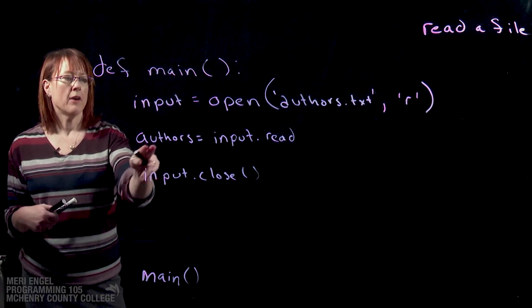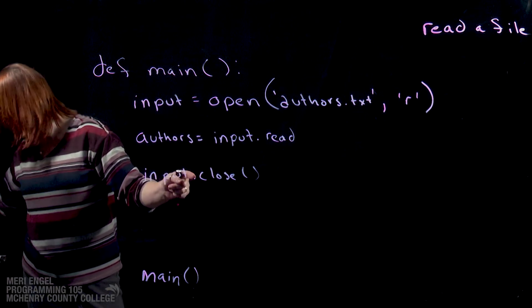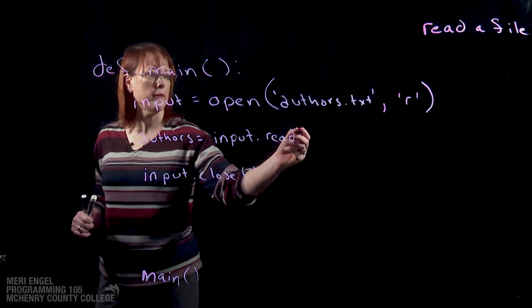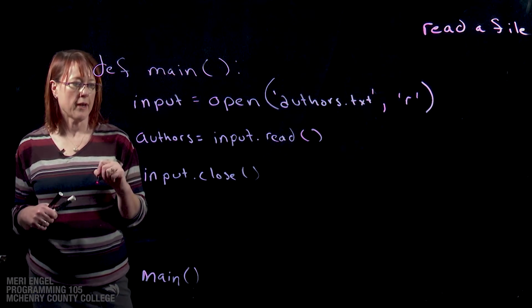And then we can have authors equals input.read, and that should have parentheses because it's a method. That's a specific function for an object.